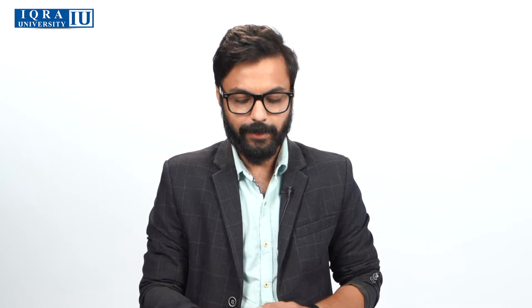This Art Direction course represents the visual representation of anything, either on the set of a film, TVC, or a documentary. But there are different types of sets as well being used in Art Direction. We are going to be firstly looking at the hierarchy of this Art Department.